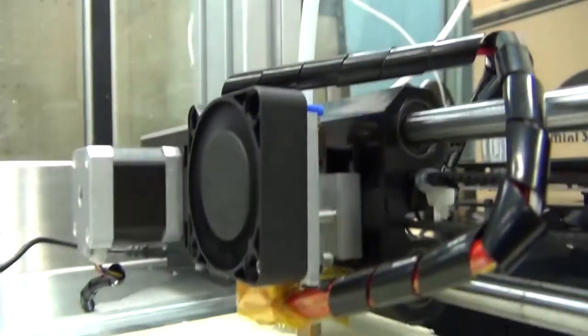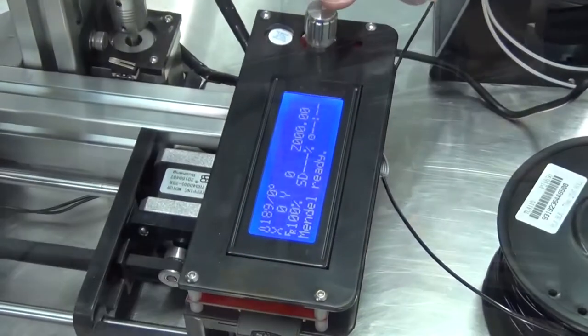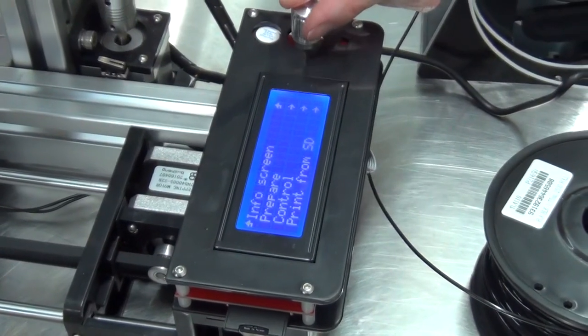You can see the extruder there might be skipping. In that case we can check the nozzle and see if it's blocked.